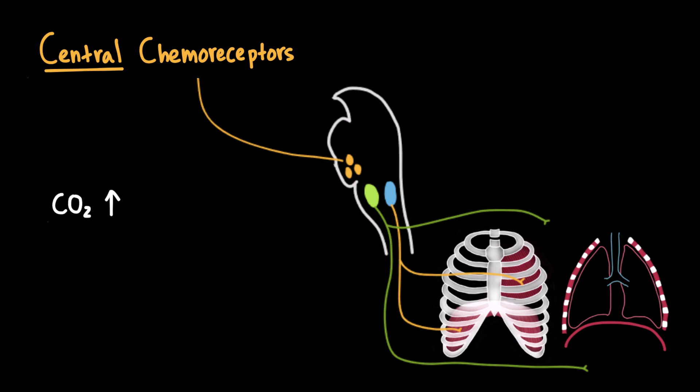it crosses the blood-brain barrier and forms carbonic acid in the CSF, which then dissociates and lowers the pH. This acidic shift is detected by the central chemoreceptors, which then stimulate the respiratory centers to increase ventilation, in order to eliminate the CO2 in excess.